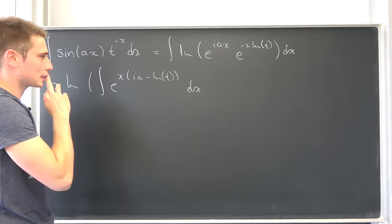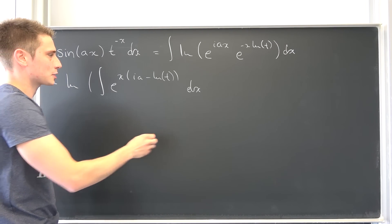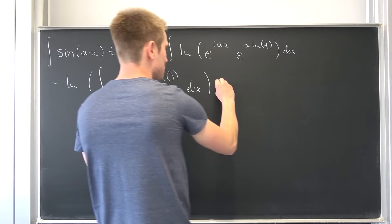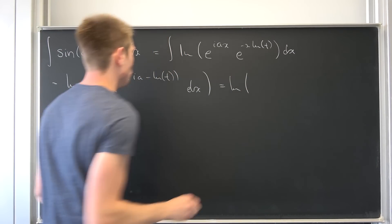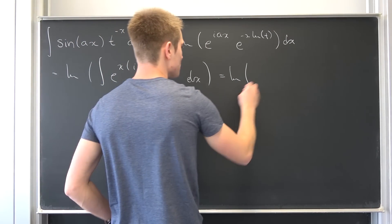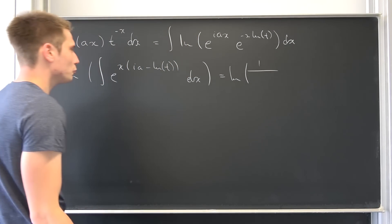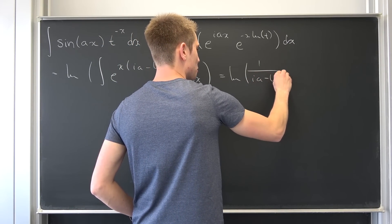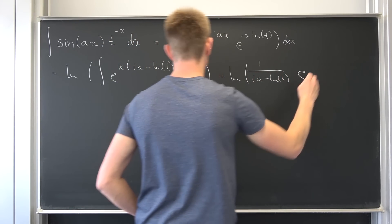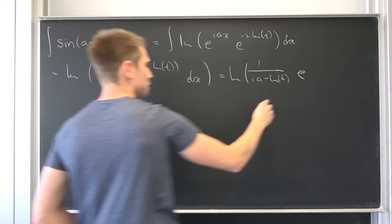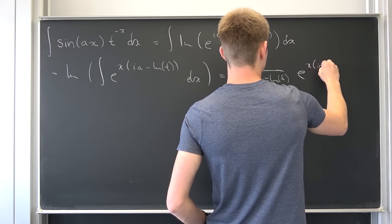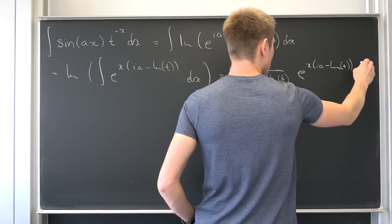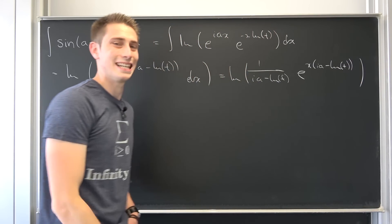Now we are going to integrate this — that's quite easy. That's the imaginary part of 1 over (i·a minus natural log(t)) times e to the x·(i·a minus natural log(t)). Closing this off — tada.